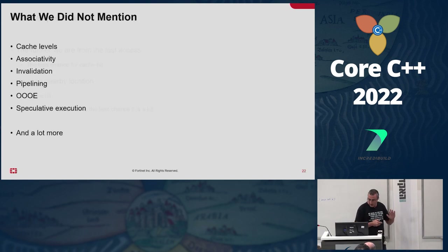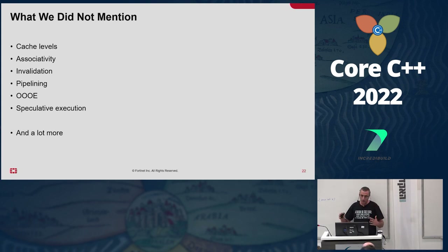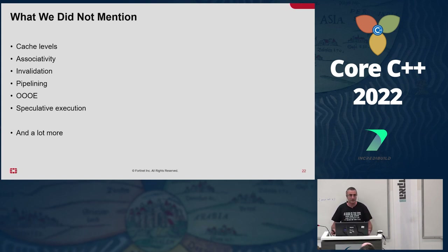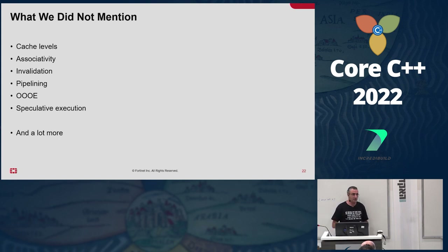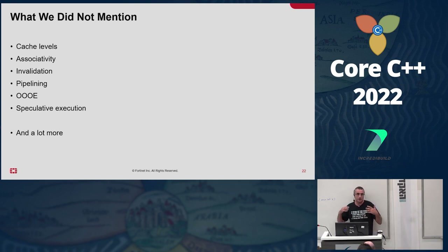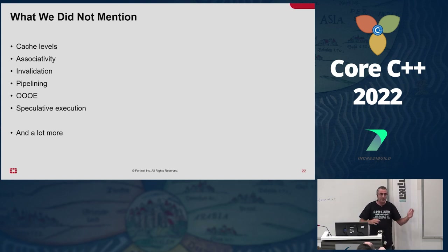That's all I'm going to talk about on the mental model. As I said, it's not comprehensive or complete. We did not mention cache-level associativity, invalidation, pipelining, out-of-order execution, speculative execution, and a lot more. I think that as professional developers, we should all be very familiar with all this — it's extremely interesting and there's plenty of material on the net. But for our practical reasoning about cache in our day-to-day work, I think what I described should suffice for most cases.